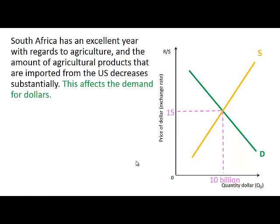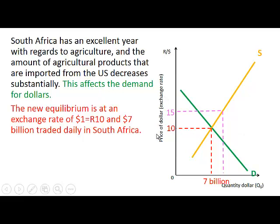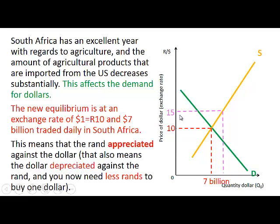Let's say South Africa has an excellent year with regards to agriculture, and the amount of agricultural products imported from the US decreases substantially. This will affect the demand for dollars — the demand will decrease. Therefore the new exchange rate will be at 10 Rand per dollar, with 7 billion dollars traded daily in South Africa. This means the Rand appreciated against the dollar and the dollar depreciated against the Rand.